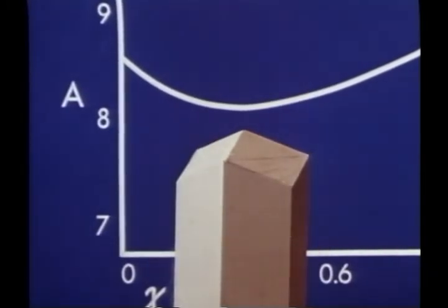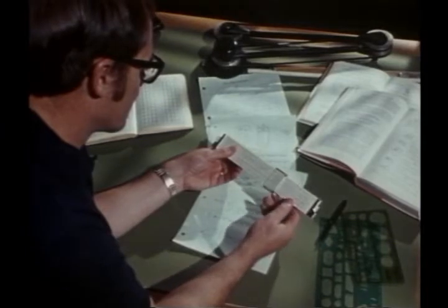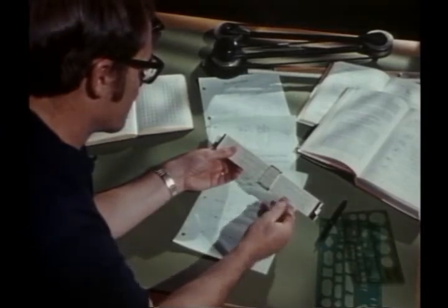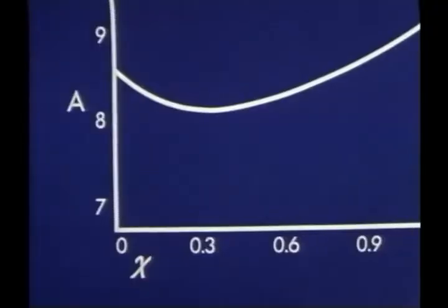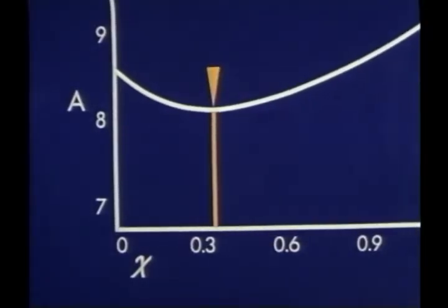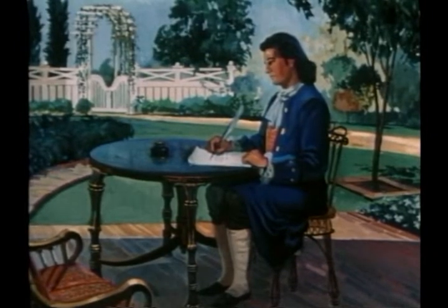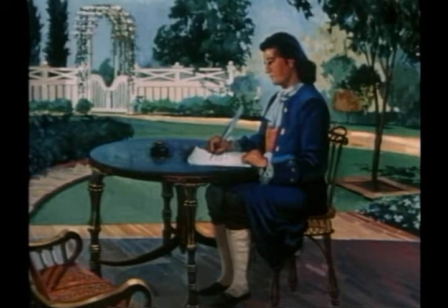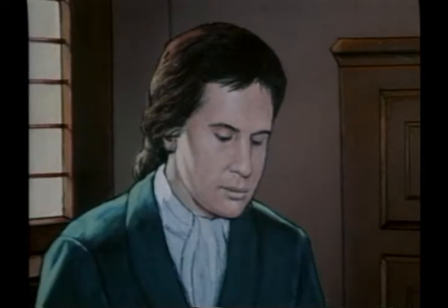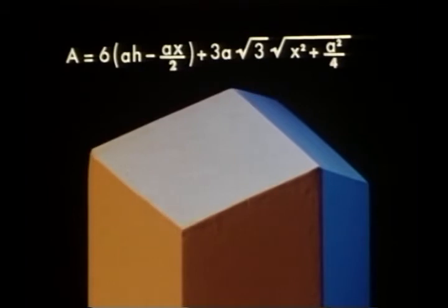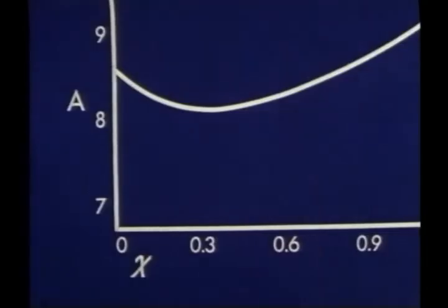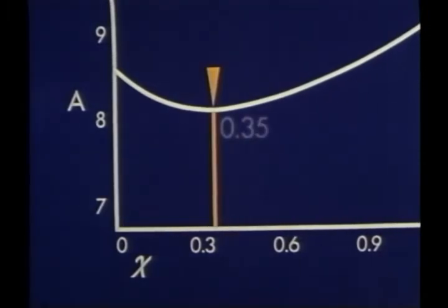Unfortunately, no amount of graphing or even brute force calculation will yield a mathematically precise answer. But there is an elegant shortcut to an exact answer. Some 300 years ago, Newton invented the calculus. About 75 years later, when few men understood the method, Koenig manipulated the formula for the area according to the precise rules of the calculus. The mathematician calls it differentiating with respect to x and equating to zero to minimize. This process yields the precise point where the surface is at a minimum.